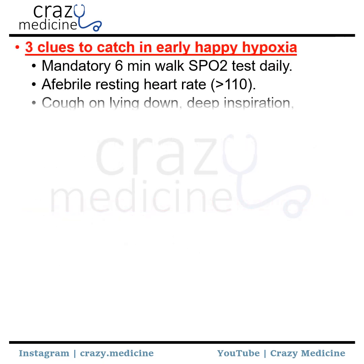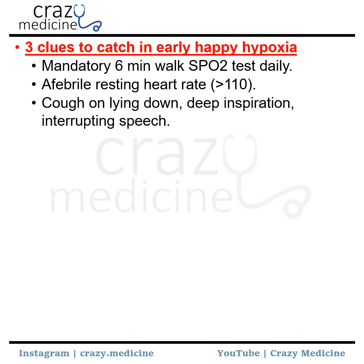Then, three clues to catch early hypoxia: mandatory 6-minute walk test with SPO2 checking before and after; resting heart rate in the afebrile state; and cough on lying down and deep inspiration, or cough that interrupts speech.